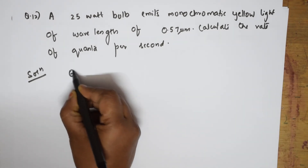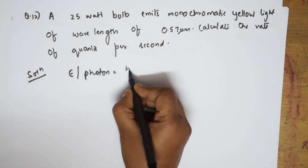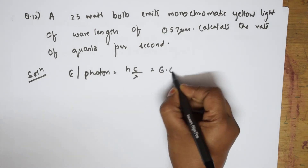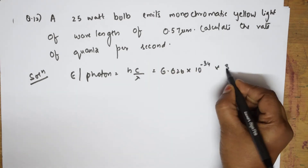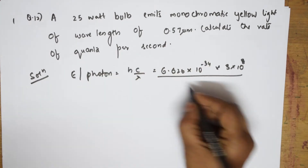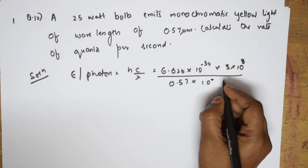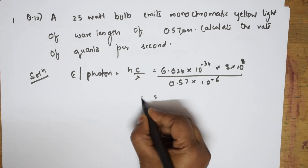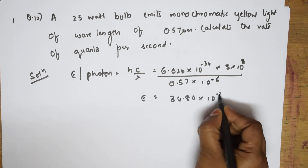The formula is E photon = hc by lambda. Substitute the value of h: 6.626 × 10⁻³⁴; velocity of light: 3 × 10⁸; divided by lambda: 0.57 microns — convert by multiplying by 10⁻⁶ to get meters. I get an answer of 34.86 × 10⁻²⁰ joules.